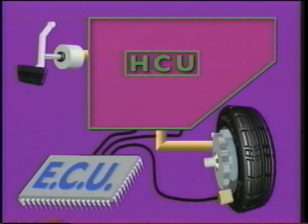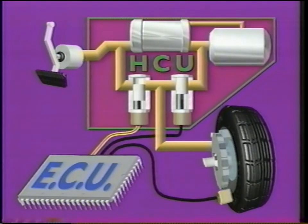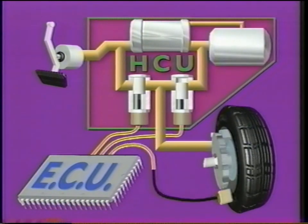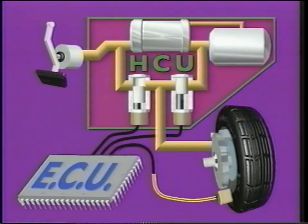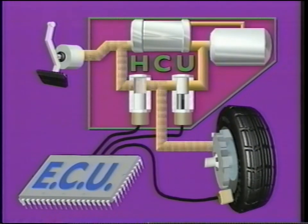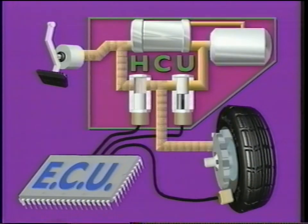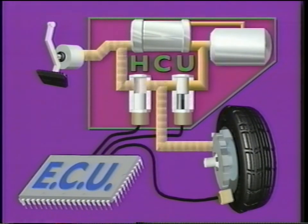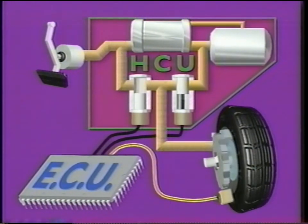The HCU translates electrical signals from the ECU into hydraulic action. The HCU uses solenoid-actuated hydraulic valves to limit or reduce hydraulic pressure to the brake calipers or wheel cylinders when the wheels are decelerating too quickly. During normal braking, ABS performs as a conventional brake system would. The ECU sends no signals to the HCU, and the HCU does not interfere with hydraulic pressure flow to the wheels.